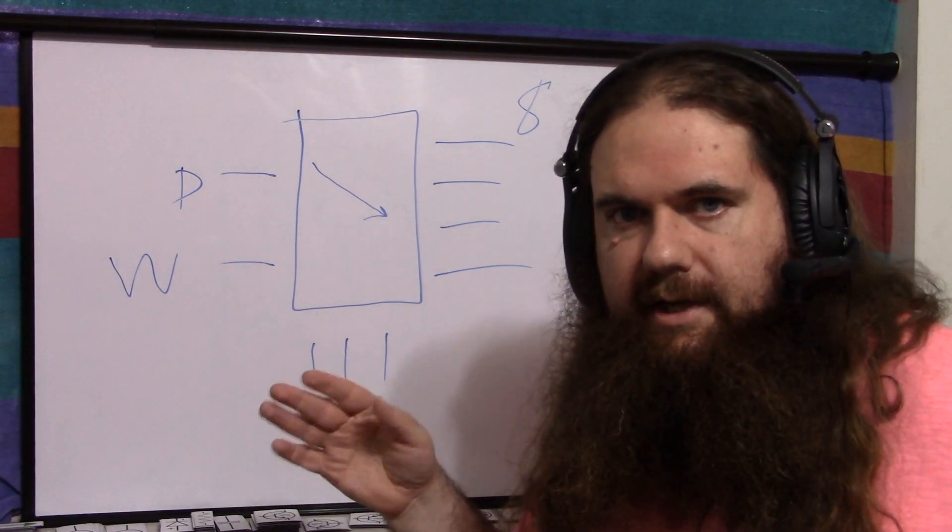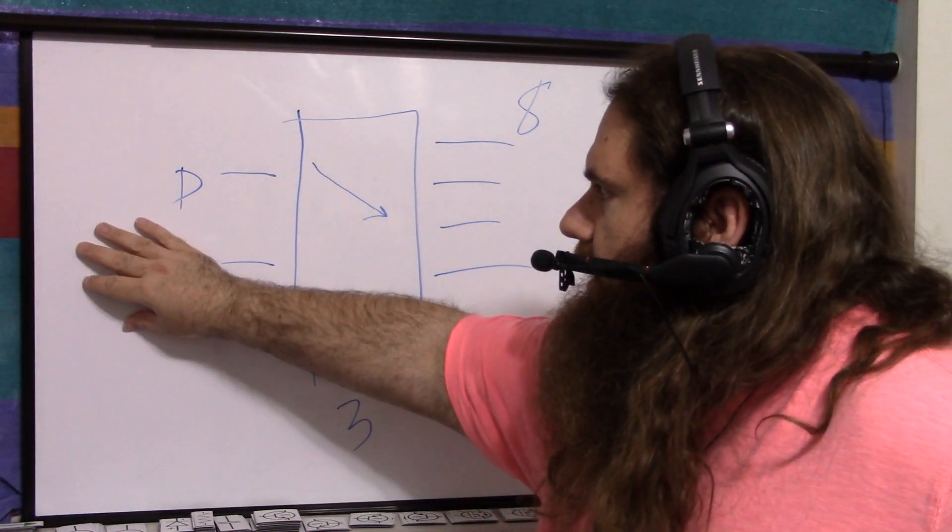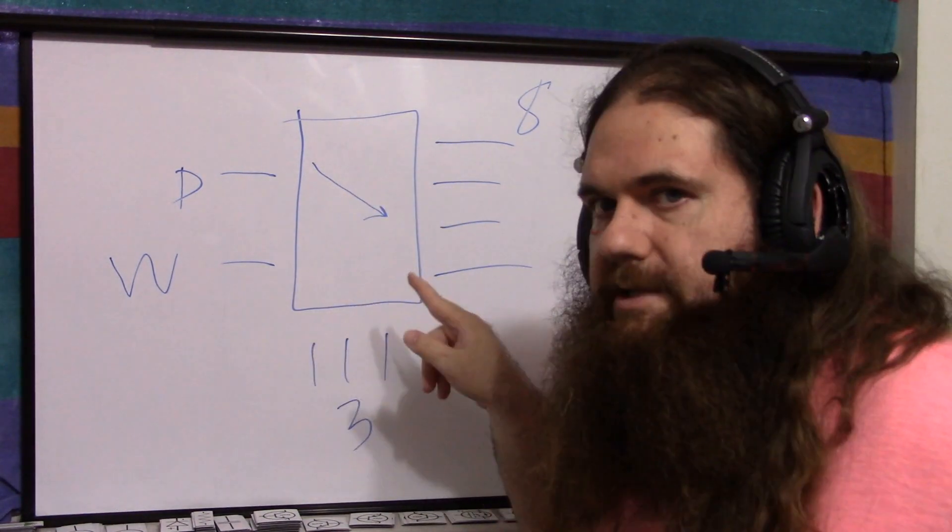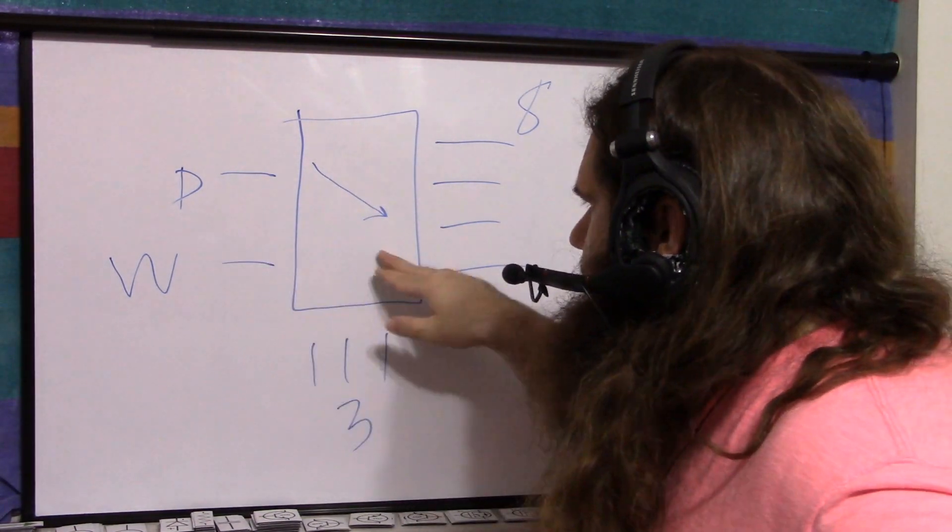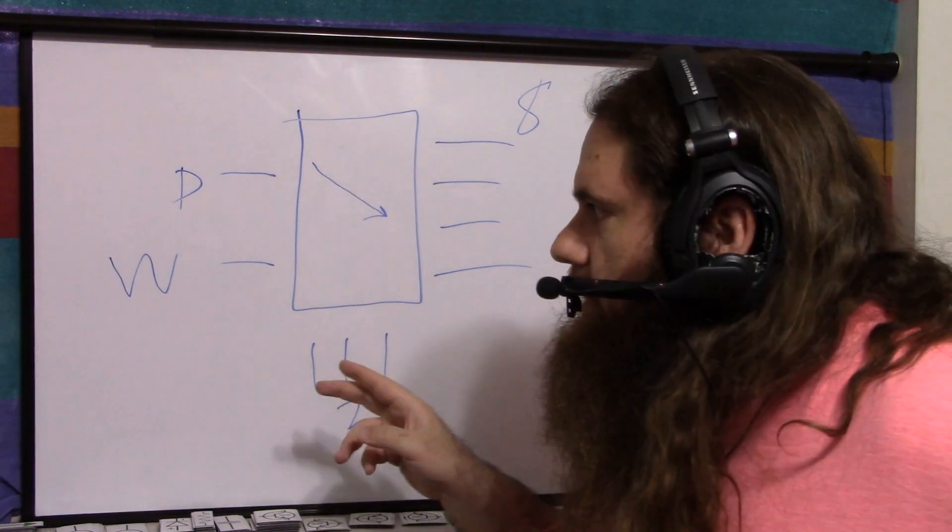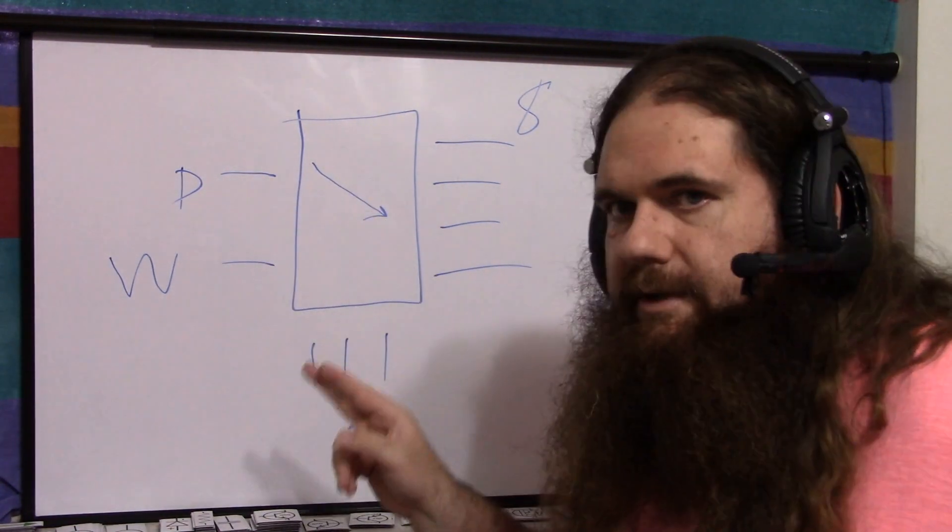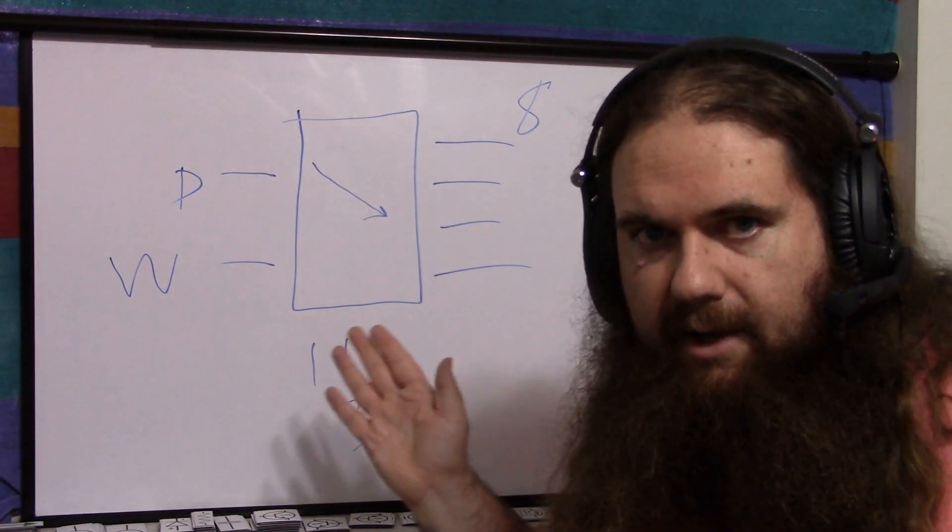And the write acts as an enable/disable. So you turn writing off when you change the address pins. And then once the address pins have settled, you turn on writing, you set the data, and it sets the value. So it gets rid of the issue of spurious outputs by disabling writing without disabling the outputs.